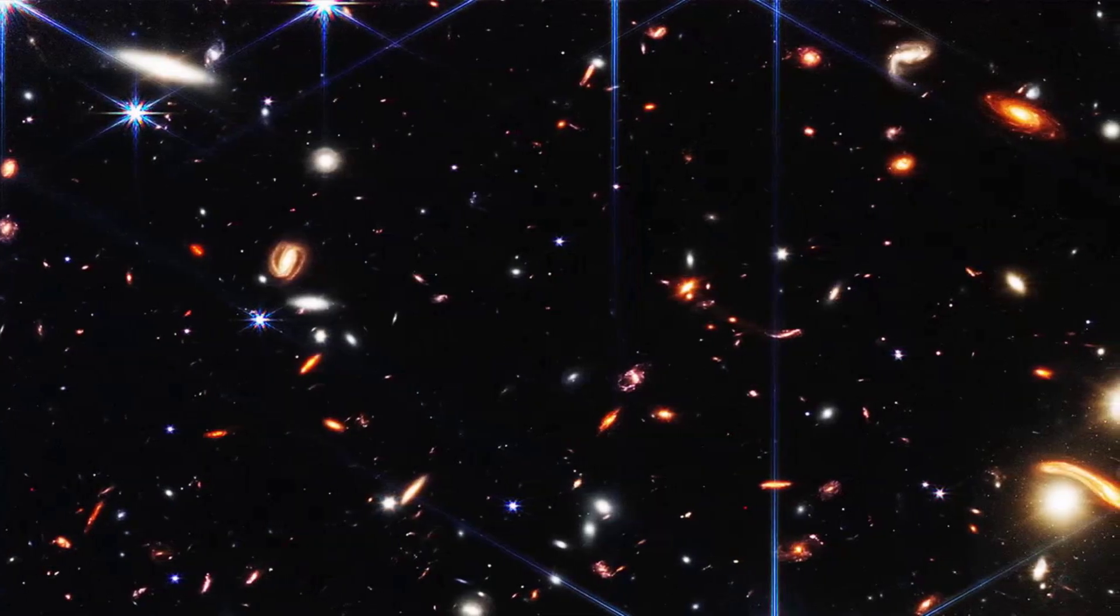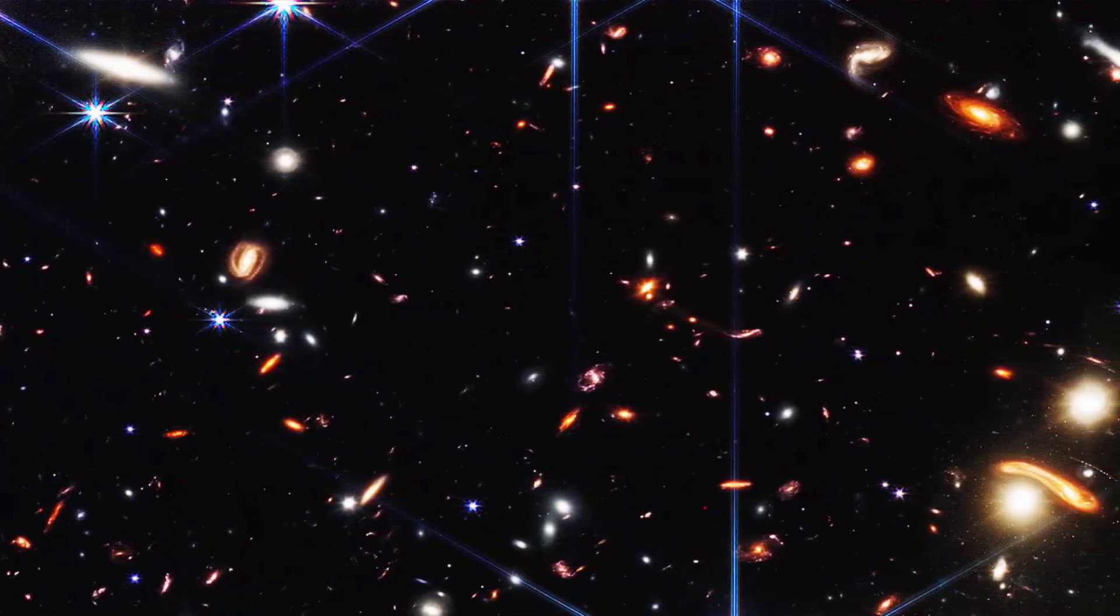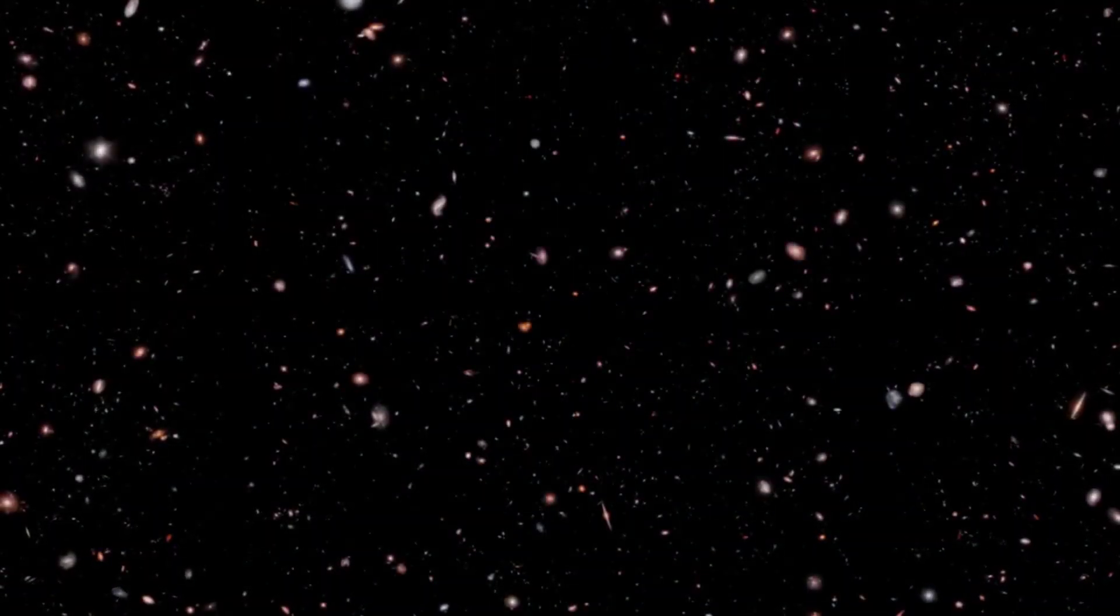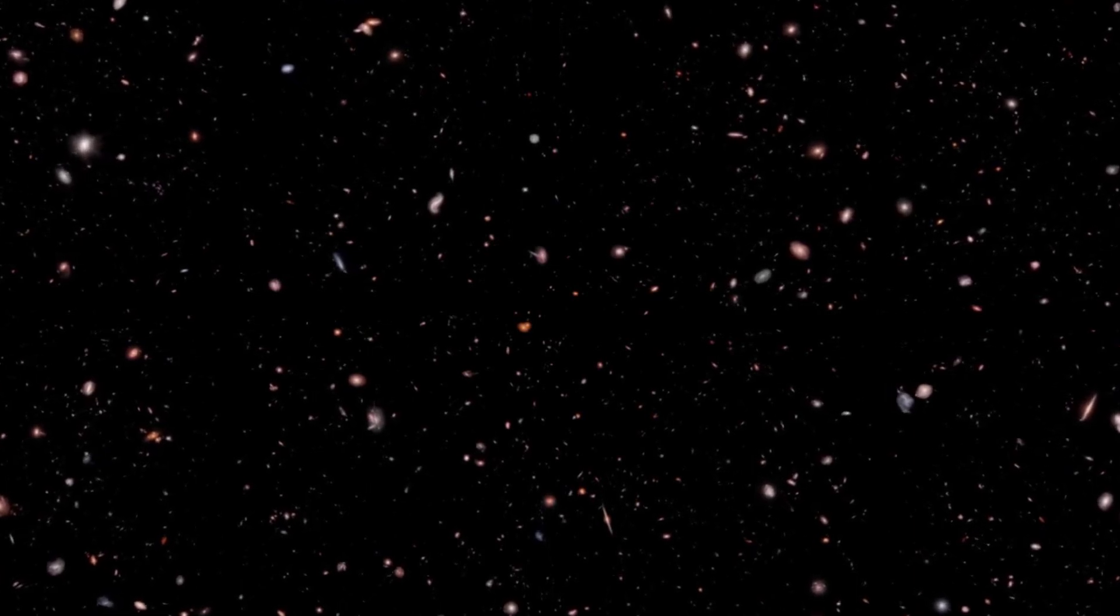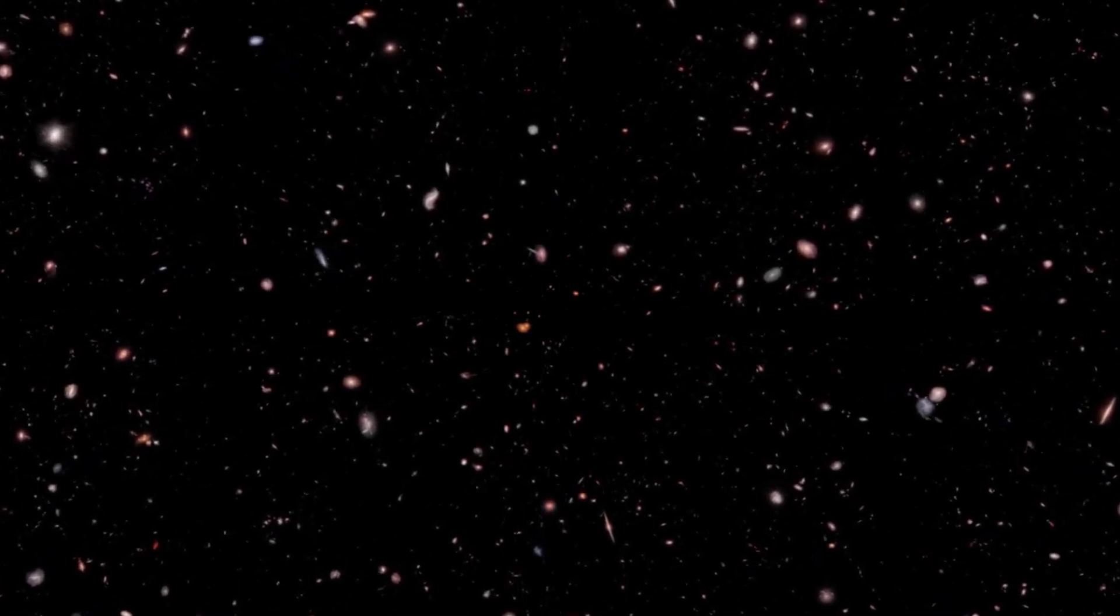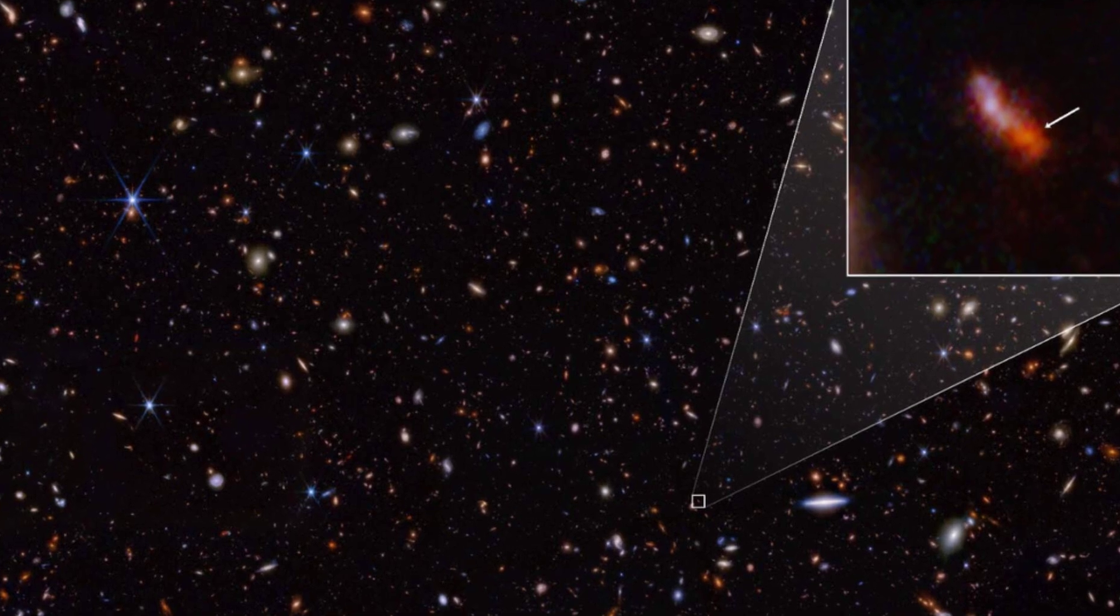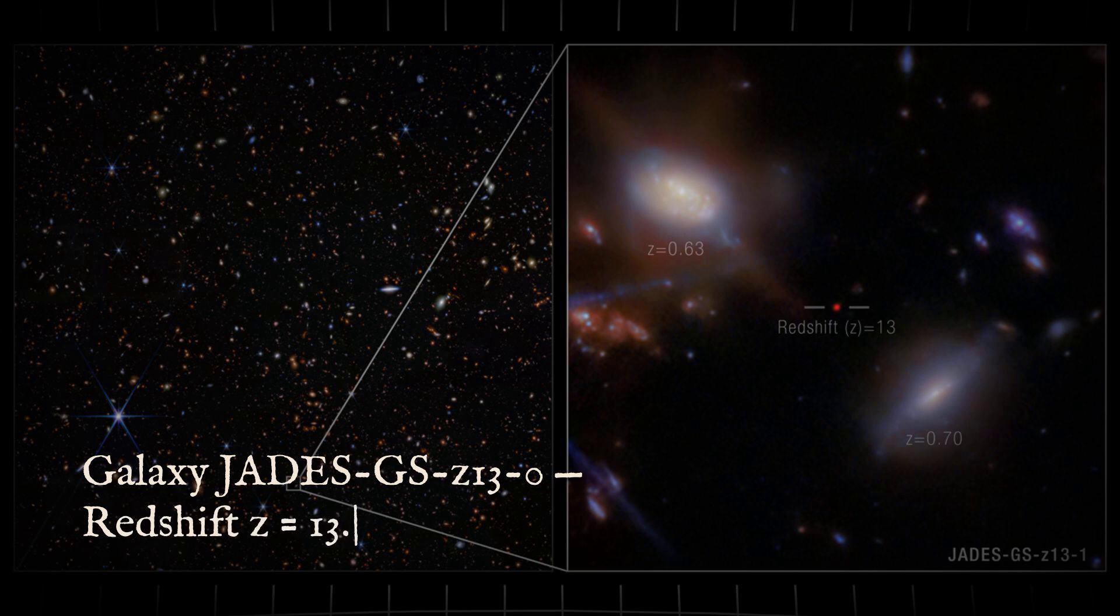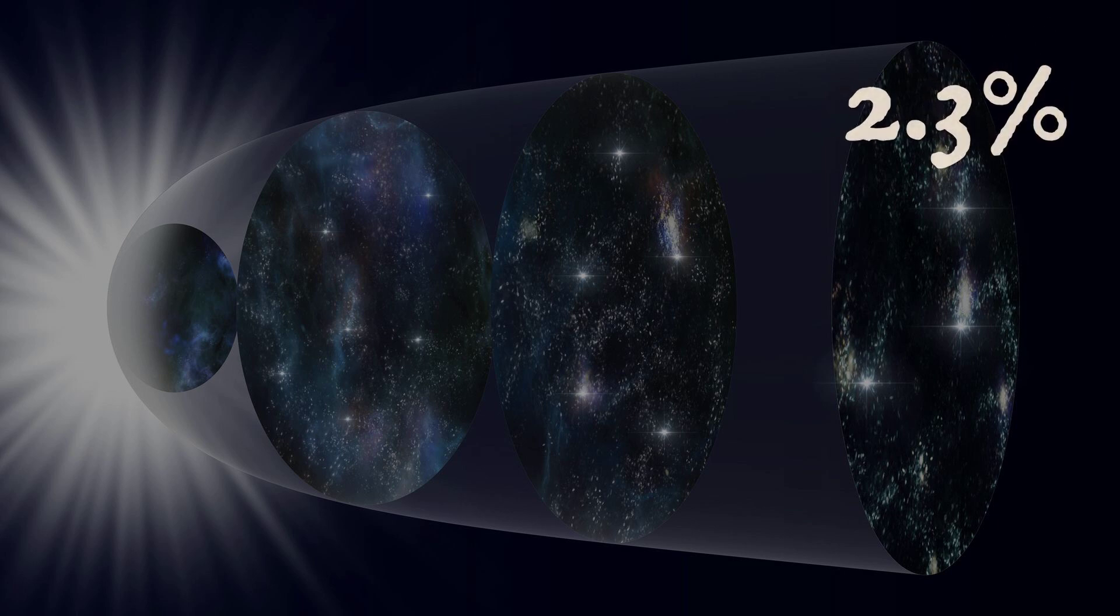A few months after launch, Webb's infrared cameras locked onto a patch of sky that, by all logic, should have been nearly empty. Instead, the data came back crowded with ancient galaxies, some so old their light started its journey just 330 million years after the Big Bang. One galaxy, cataloged as JADES-GS-z13-0, sits at a redshift of 13.2.